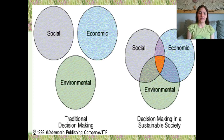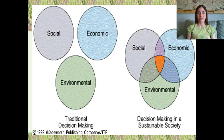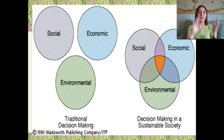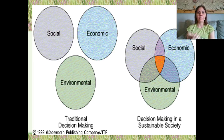Traditional decision making was very separated — one bubble of social, one of economic, one of environmental, and we don't really think about overlaps anywhere. What we need to move toward is decision making in a sustainable society, which looks at the overlaps: how is a social and economic decision going to impact the environment?